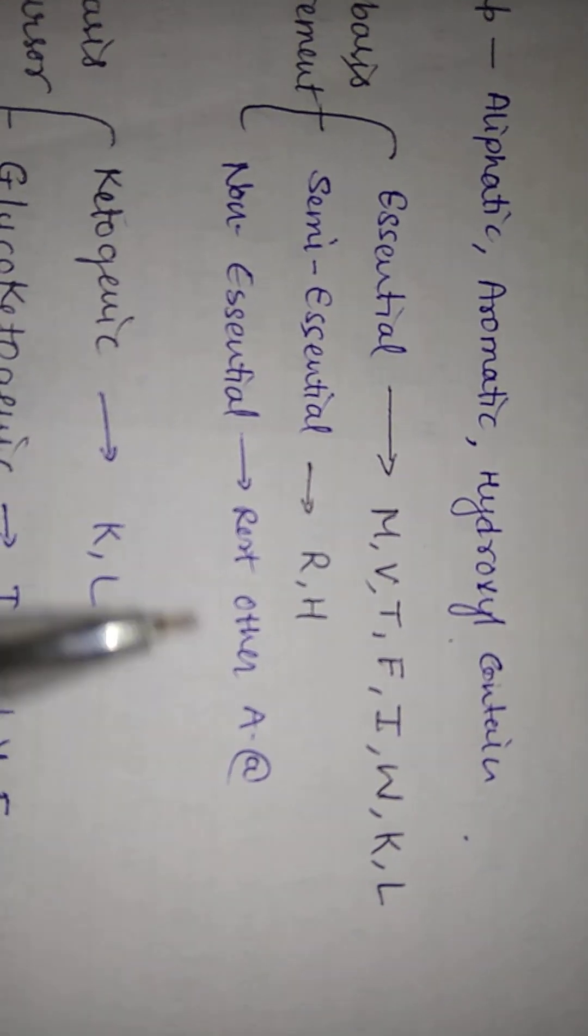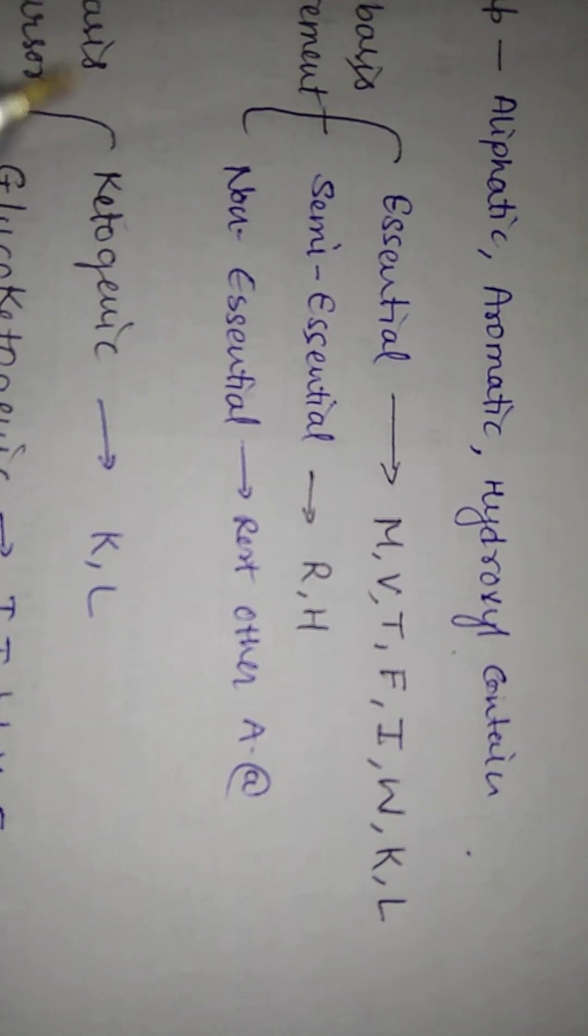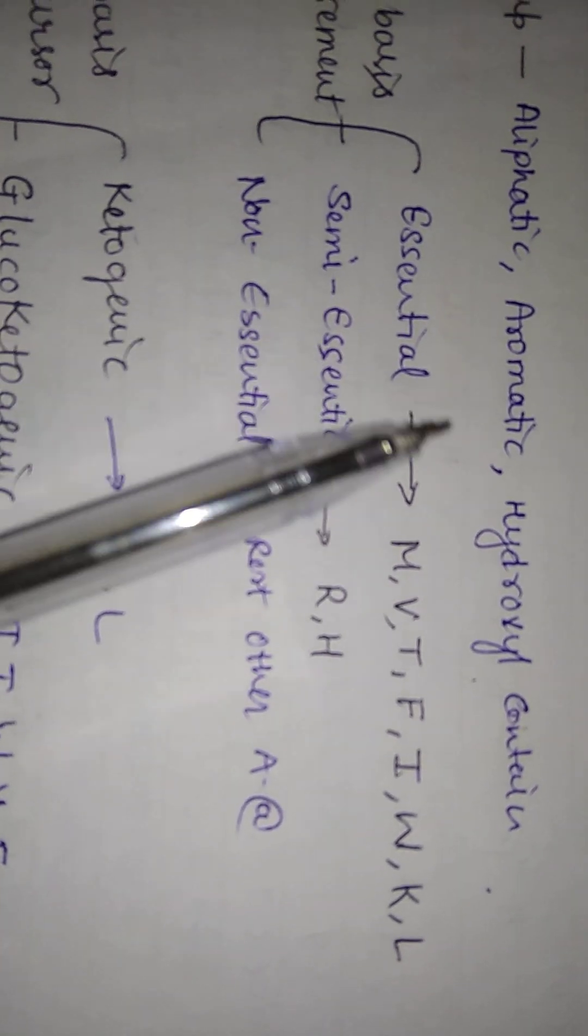Non-essential types are those which the body can synthesize. Ribosomes are used for protein synthesis.